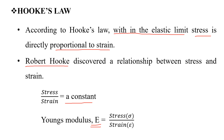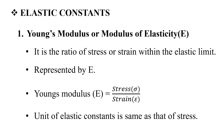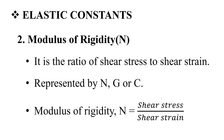Young's modulus is equal to stress by strain. In the elastic constants, the first one is the modulus of elasticity — it is the ratio of stress to strain within the elastic limit. It is represented by the capital letter E. Young's modulus E is equal to stress by strain, that is sigma by epsilon.